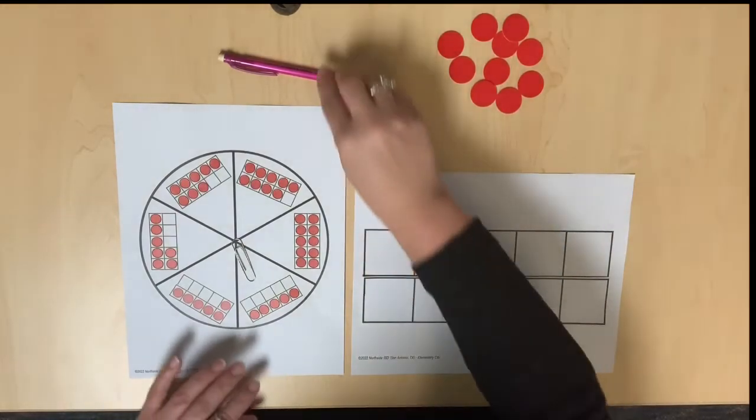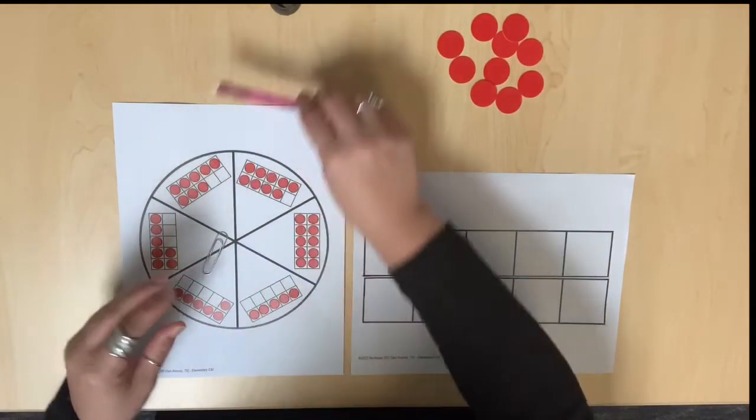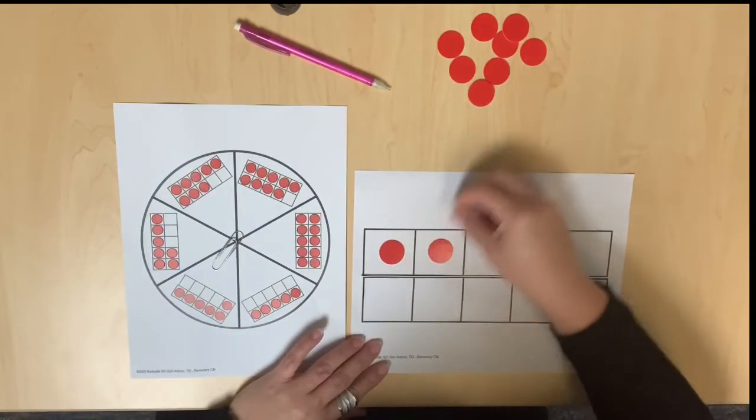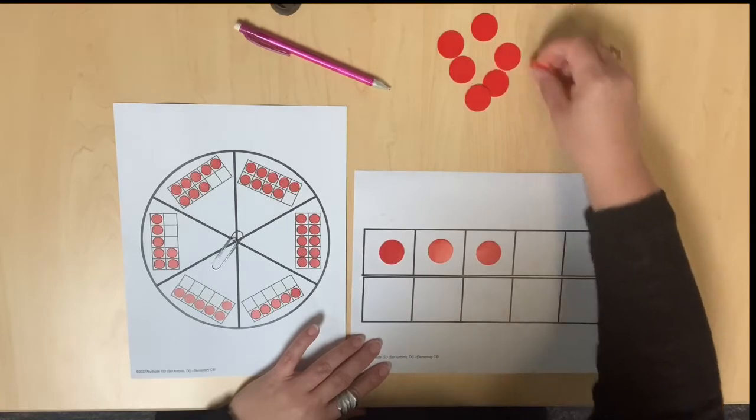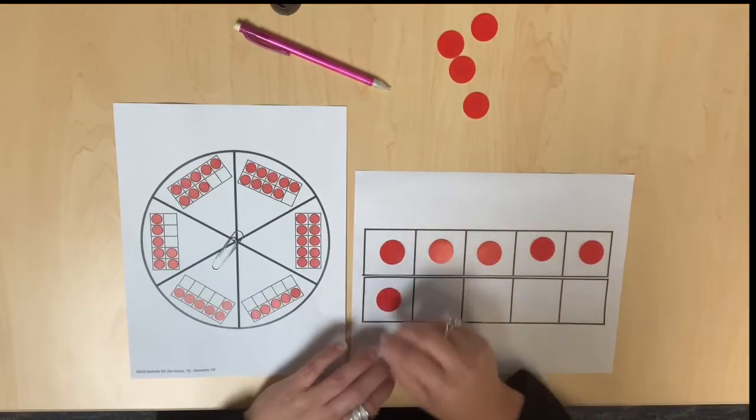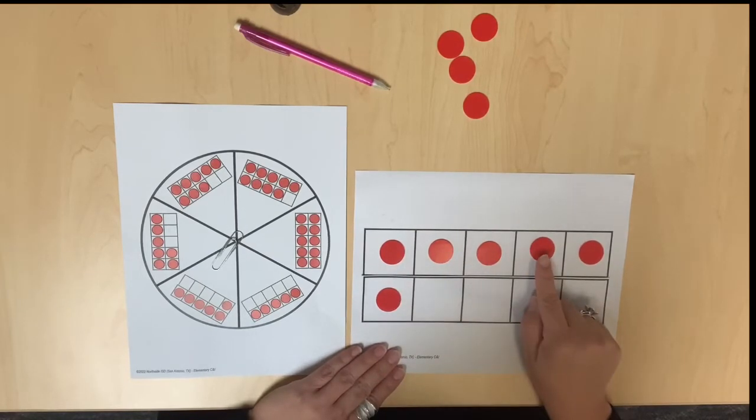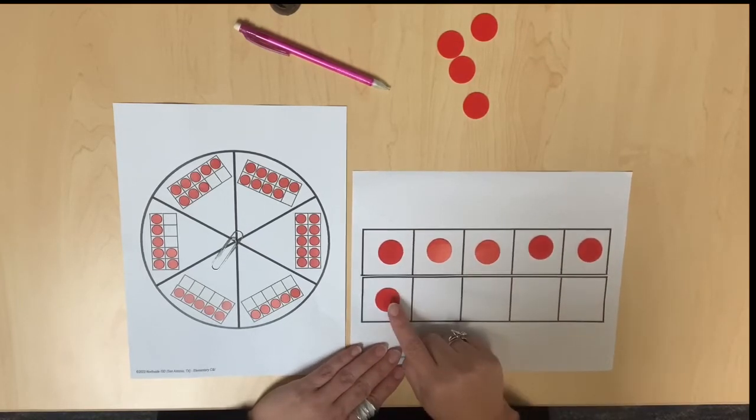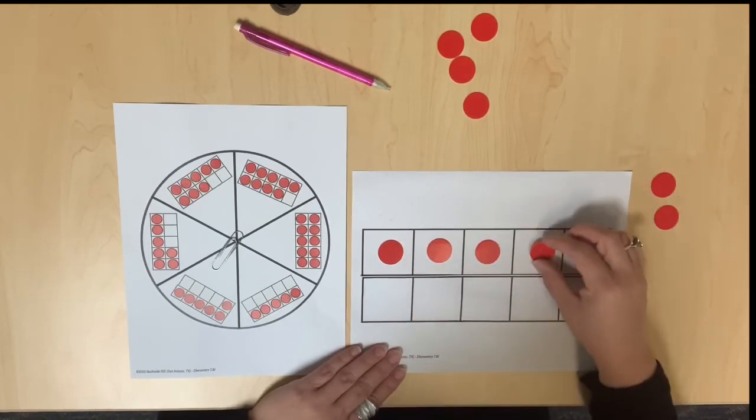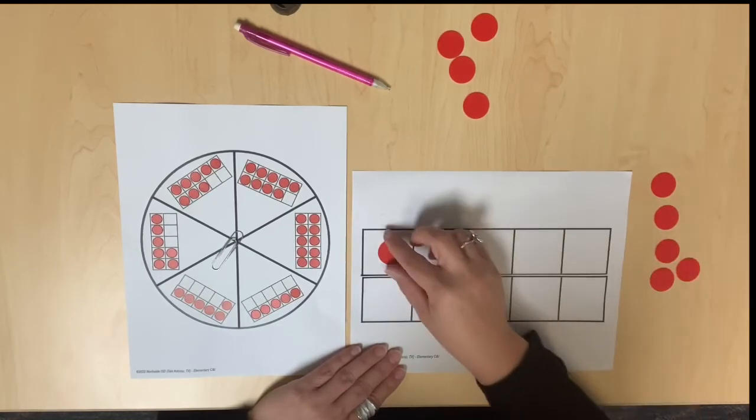Finally, students will use a pictorial representation such as 10 frames on a spinner. Students will spin and represent each quantity on a 10 frame while practicing counting forward and backward: 1, 2, 3, 4, 5, 6, then 5, 4, 3, 2, 1, 0.